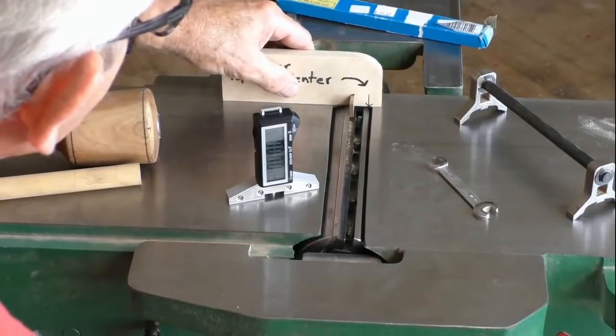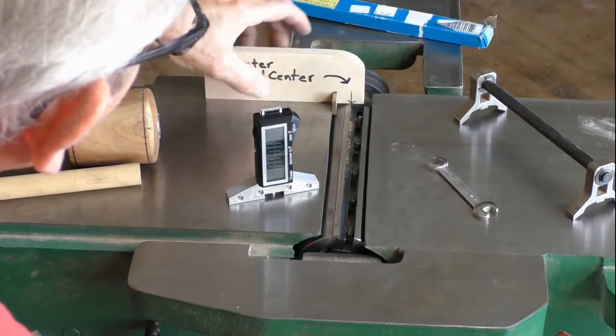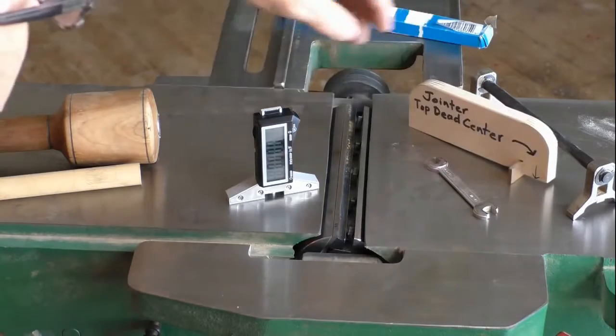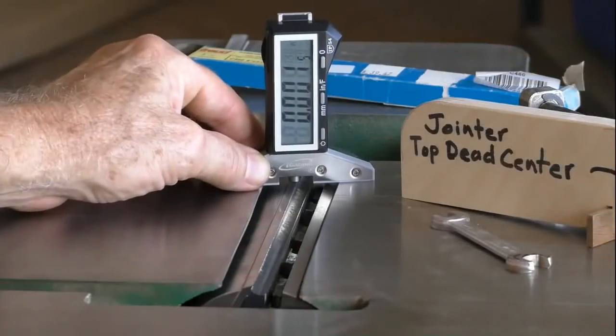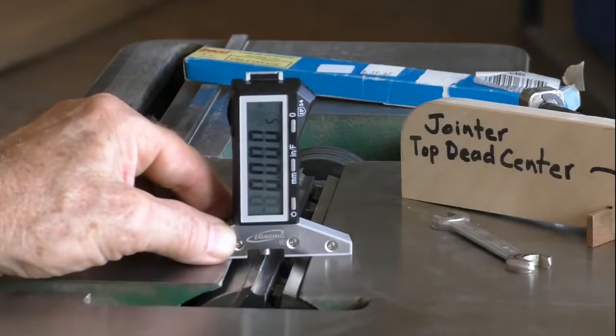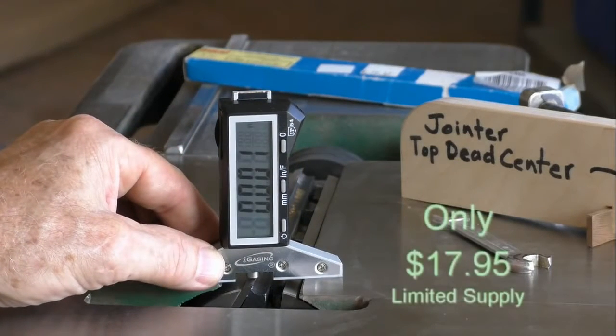Using PlaneCheck while setting joiner knives follows much the same procedure. After adjusting the infeed table so it's coplanar with the outfeed table, rotate the knife to top dead center. Now use PlaneCheck to read the height across the length of the knife. Readings should be between 0 and 2 thousandths of an inch. Adjust the other joiner knives similarly.